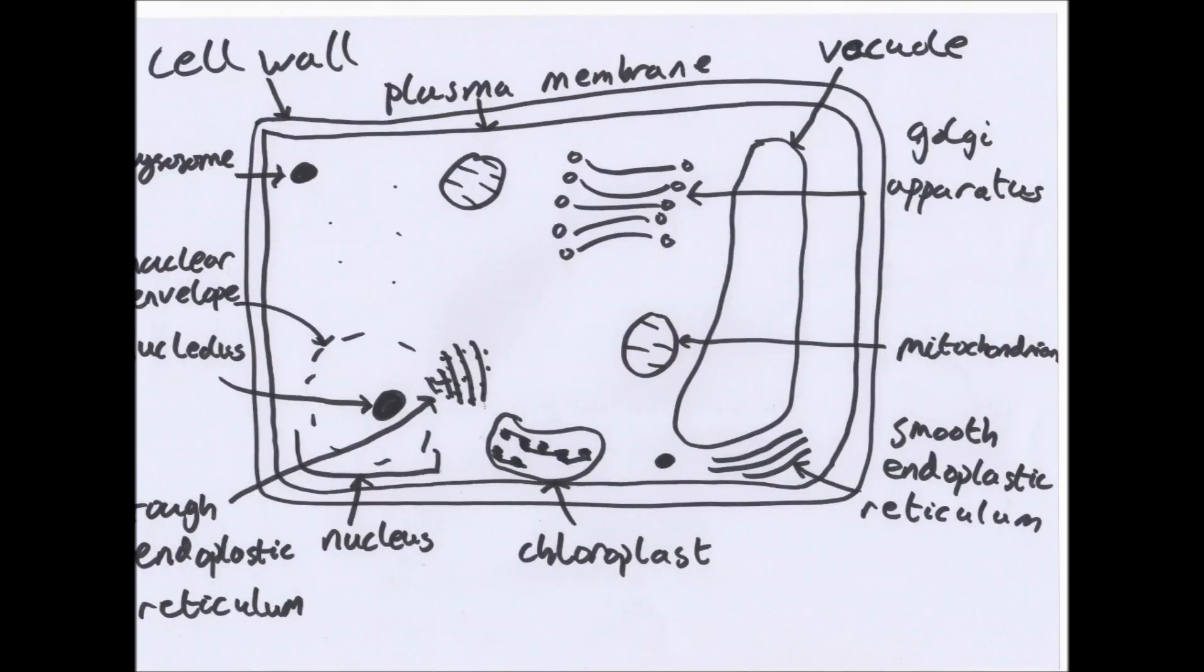Here is a plant cell. As you can see there are a few differences, mainly the cell wall, the chloroplast, and a much bigger vacuole.